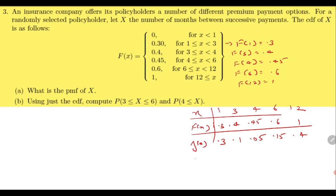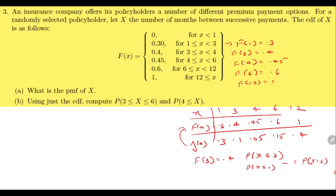The idea is clear: F(3) = P(X ≤ 3) = 0.4 and P(X ≤ 1) = 0.3, so subtracting gives P(X = 3) = 0.1. You can verify: from PMF to CDF, keep adding — 0.3 + 0.1 = 0.4, then 0.4 + 0.05 = 0.45, and so on. By subtracting CDF values you recover the PMF. The key is identifying at what values small x is defined: here x can take 1, 3, 4, 6, 12.